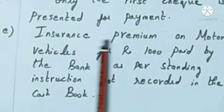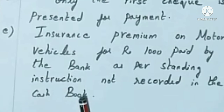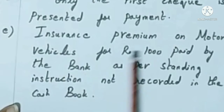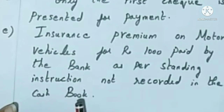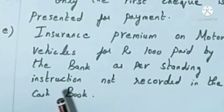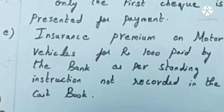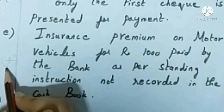Insurance premium on motor vehicles for Rs. 1000 paid by the bank as per standing instruction, not recorded in the cashbook. The passbook has recorded it but the cashbook hasn't. In order to match the passbook and cashbook balances, we should add Rs. 1000 to our cashbook.